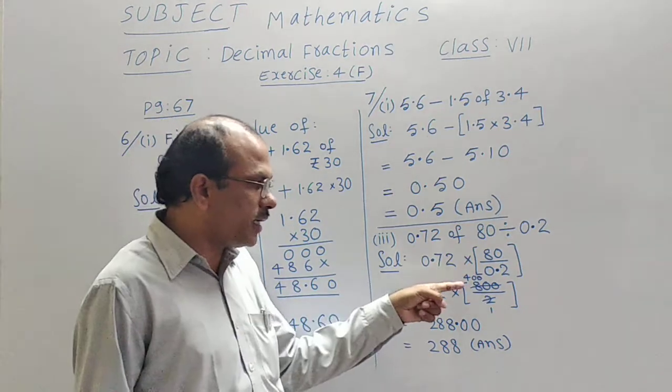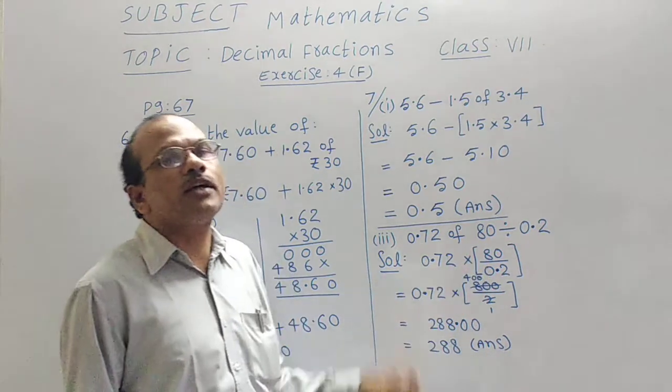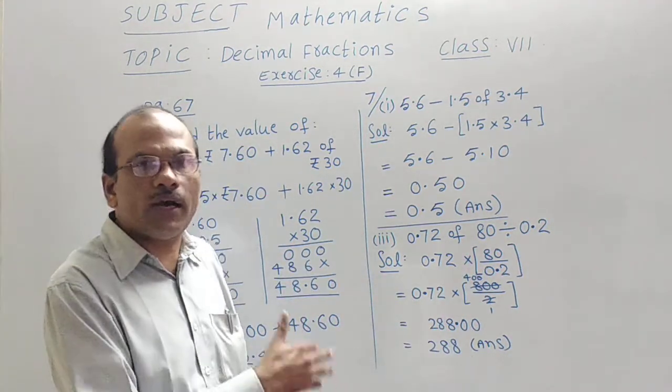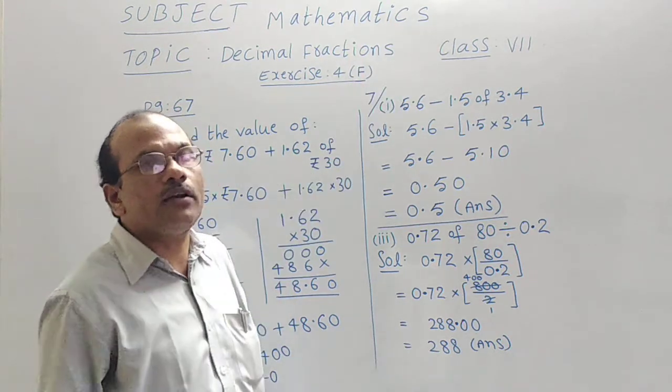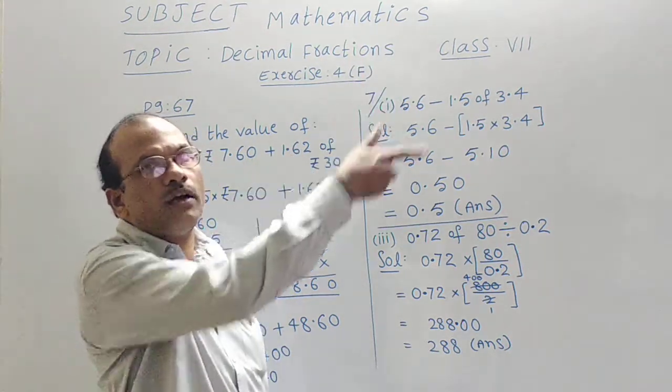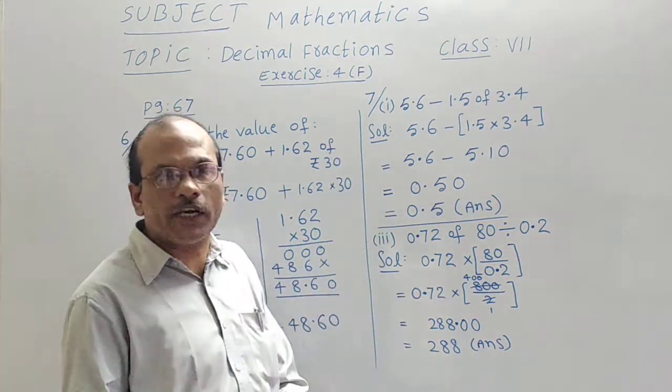80 written as 800. 0.2 written as only 2. Because point which is after 1 digit, I have removed in the denominator. Then I have written 0 beside 80. That is 800 in the numerator. Then this point will be removed.